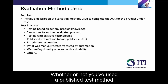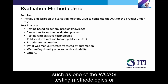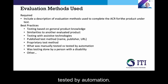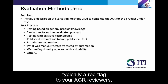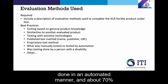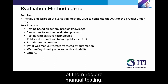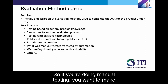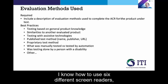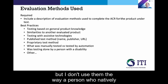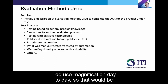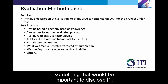Whether or not you've used a published test method, such as one of the WCAG testing methodologies, or whether you've used a proprietary testing method. What was manually tested versus what was tested by automation? If you're only disclosing automated testing, that's typically a red flag to your ACR reviewers, because only about 30% of tests can be done in an automated manner, and about 70% require manual testing. So if you're doing manual testing, you want to make sure you disclose that. Was the testing done by a person with a disability? I know how to use six different screen readers, but I don't use them the way a person who natively uses a screen reader day-to-day uses them. I do use magnification day-to-day, so that would be something important to disclose if I was doing the testing.